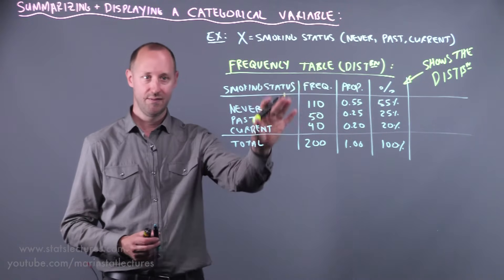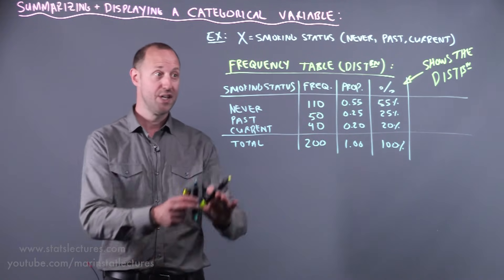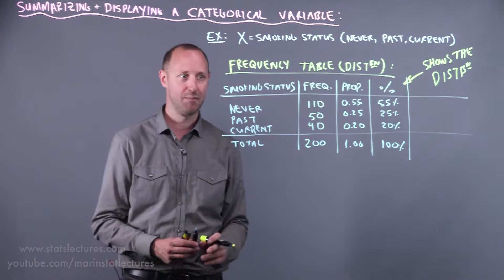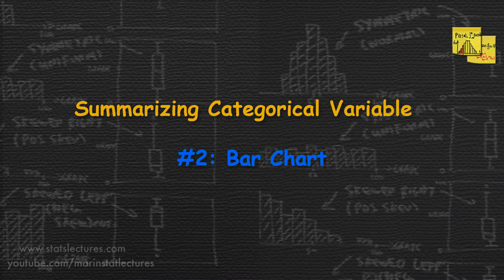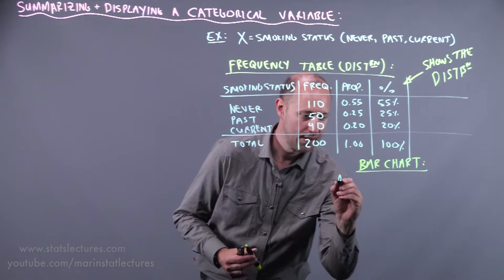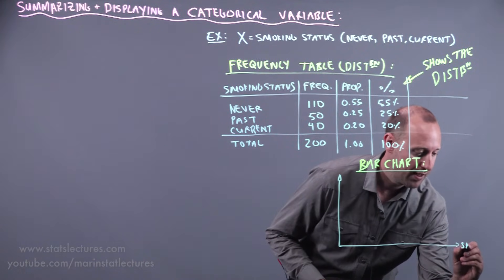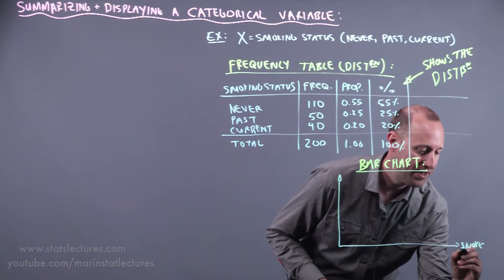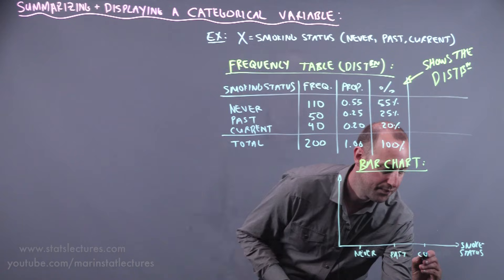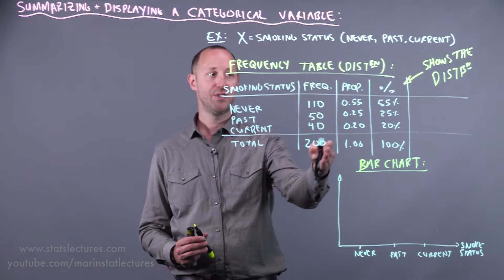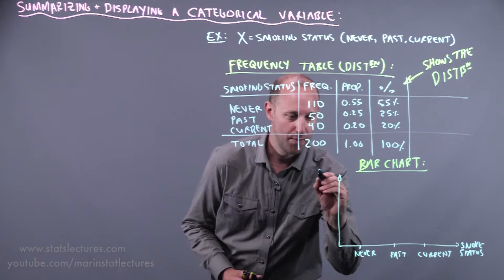Now if we want to make a plot of this, it's nice if we can make a visual of this table rather than just looking at numbers, especially when we have lots of categories or the table gets bigger. We can make either a bar chart or a pie chart. Let's start by talking about the bar chart. A bar chart has along the x-axis the variable—so here we're looking at smoking status, recorded as never, past, or current—and along the y-axis we can put the frequency, the proportion, or the percentage. The plots can look the same.